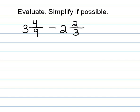So the first thing we are going to do is turn these mixed numbers into improper fractions. So 9 times 3 is 27, plus 4 is 31, so we have 31 ninths. 3 times 2 is 6, plus 2 is 8, so we have 8 thirds.